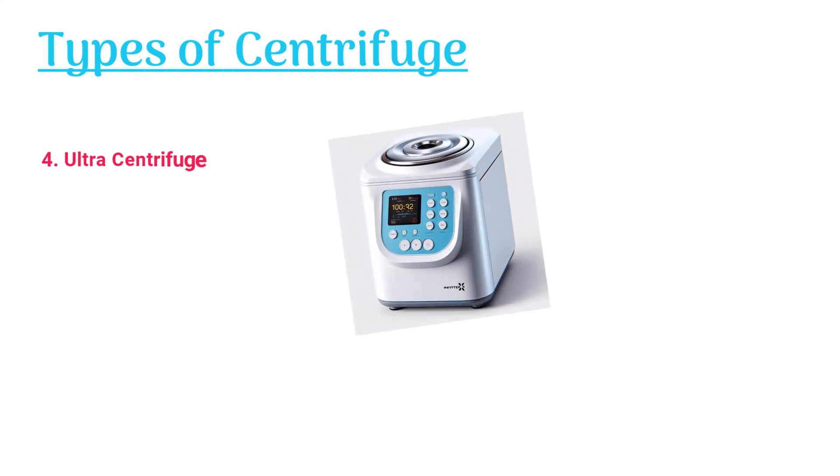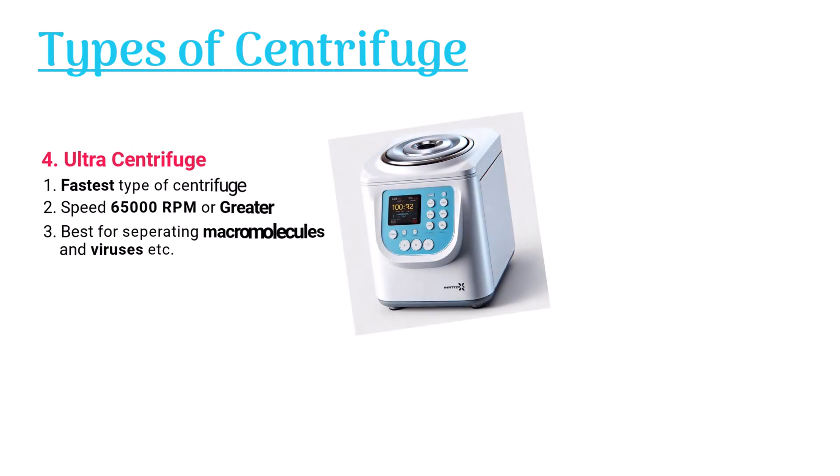The ultra centrifuge is the fastest type of centrifuge. It can rotate at a very high speed of up to 65,000 rpm or greater, and it is best for the separation of macromolecules and viruses.